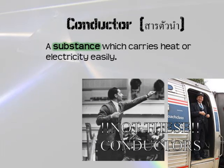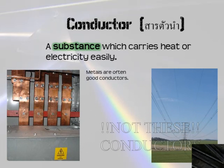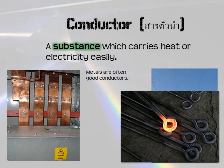A conductor — not a conductor of music or a conductor on a train or bus, but a substance which carries heat or electricity easily. Metals are often good conductors: they can carry electricity — you can see copper in an electrical box on the left — or heat. You can see an iron peg which is red hot on the right. So anything which carries heat or electricity easily is a good conductor.